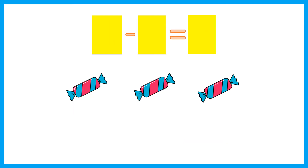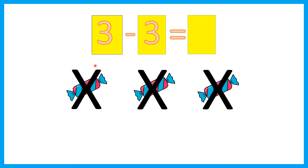What about this one? How many sweets are there? Let's count. 1, 2, 3. There are three sweets. Minus three. So we need to cross out three sweets. 1, 2, 3. How many left? There is nothing left. That means zero.